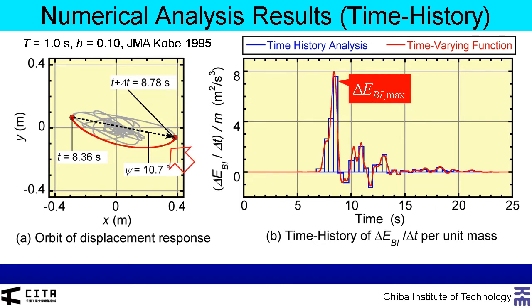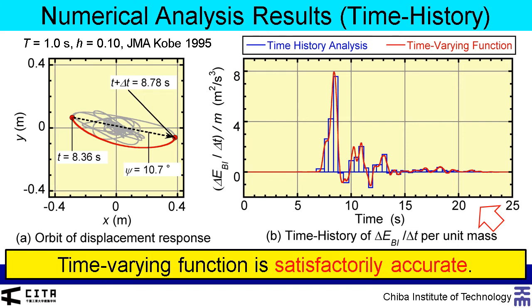The half-cycle shown in the orbit corresponds to the half-cycle of response at the maximum momentary energy input. This graph also compares the time history obtained from time history analysis and the time-varying function. As shown here, the time-varying function is satisfactorily accurate.